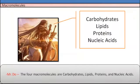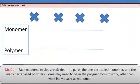The four macromolecules are carbohydrates, lipids, proteins, and nucleic acids. Each macromolecule is divided into parts. The one part is called monomer and the many parts are called polymer. Some may need to be in the polymer form to work. Others can work individually as monomers.